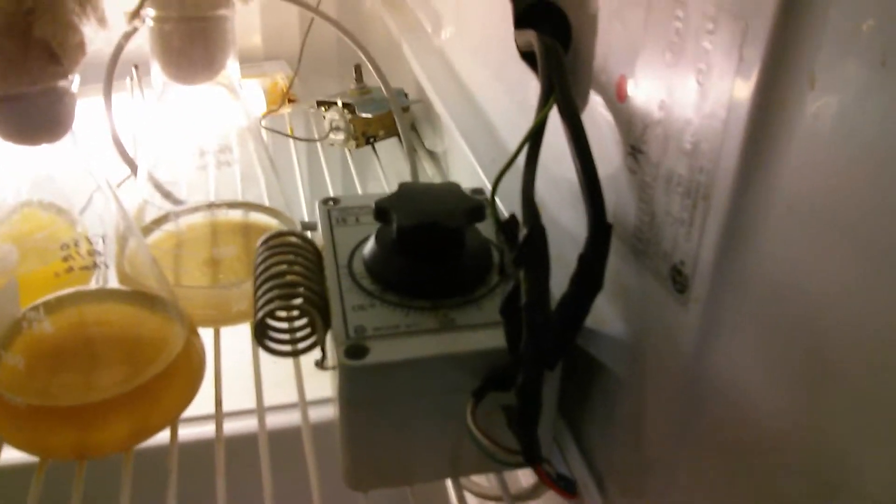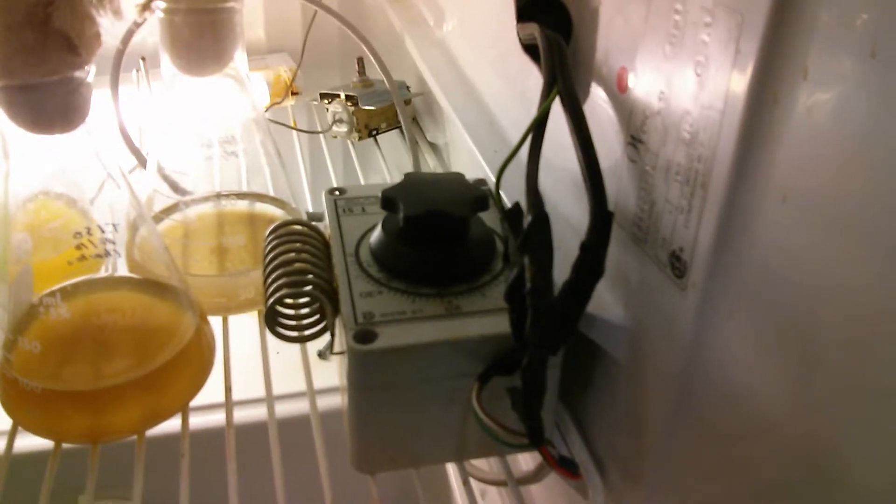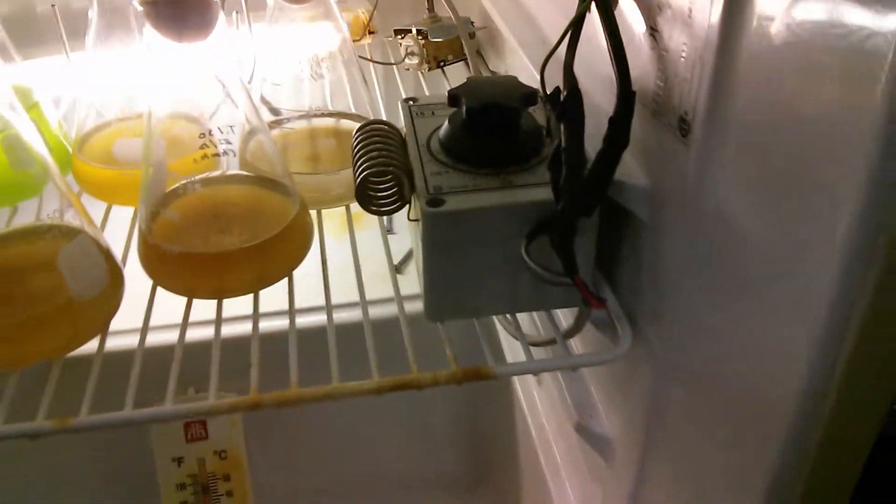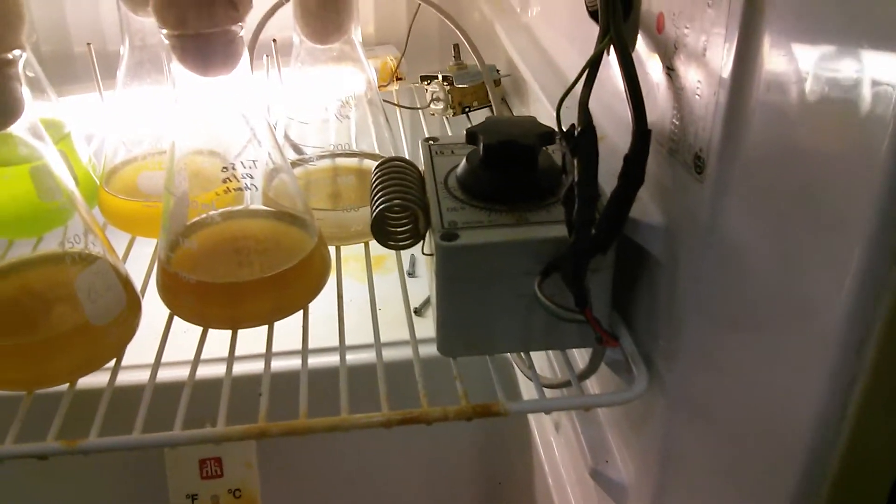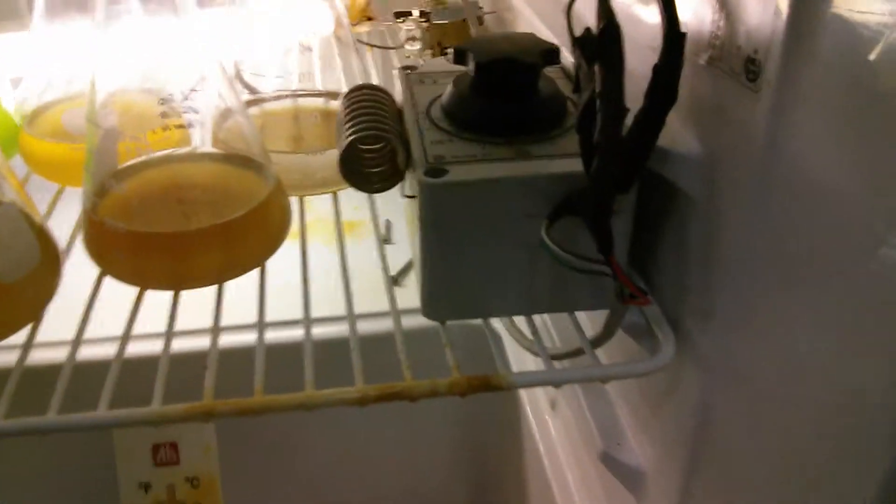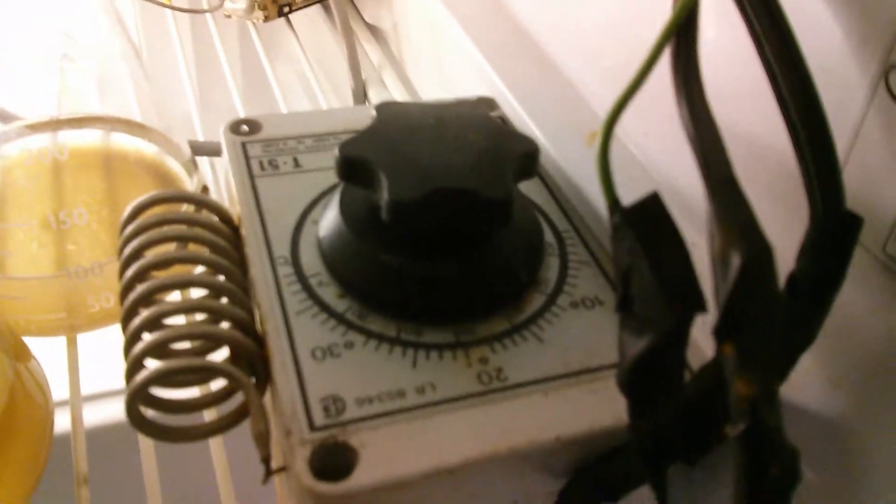A little control box there that you use to control the temperature from a refrigerator into the range that you want for a growth chamber. You can see that one there where it's set.